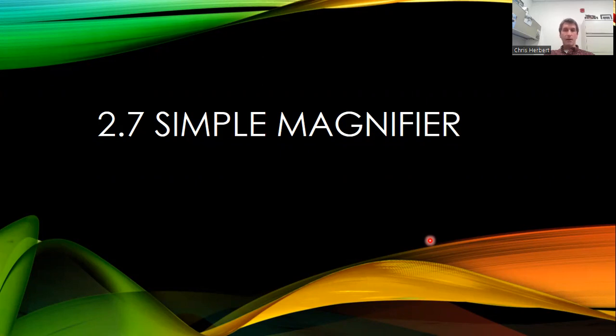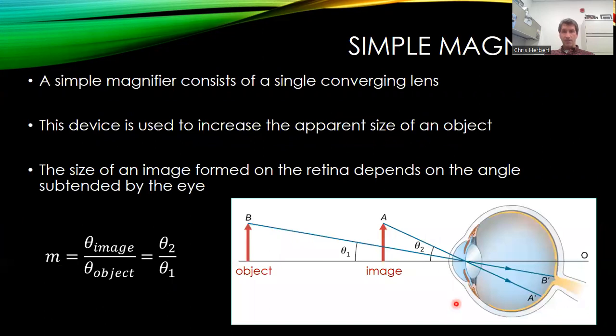So if we look at basically what a simple magnifier does, it takes some object—say I have some object that I want to look at, which is B, and I want to magnify it. So it is going to create a virtual image of that object, which my eye is then going to create a new image out of.